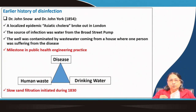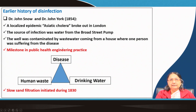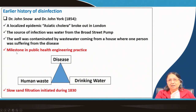An important early history of disinfection milestone: John Snow in 1854 investigated a localized epidemic of Asiatic cholera in London. The source of infection was water from the Broad Street pump — the well was contaminated by wastewater from a house where someone was suffering from the disease, through a broken sewer. Exhaustive scientific studies by these persons revealed the relationship between human waste, drinking water, and disease.